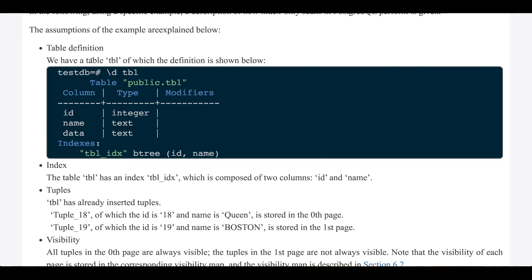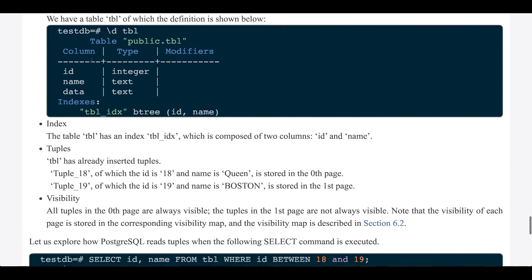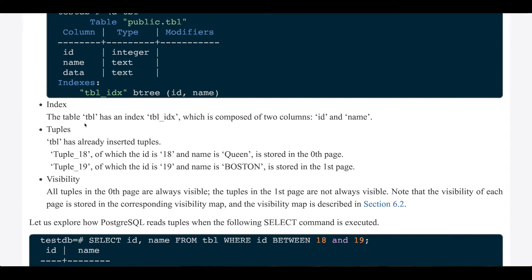Table definition: We have a table, of which the definition is shown below. Index: The table has an index table_index, which is composed of two columns, id and name.